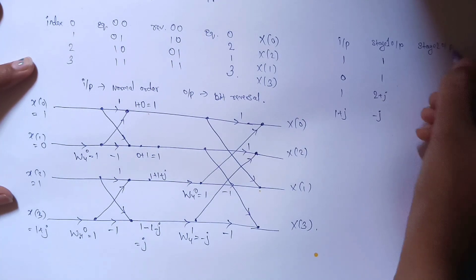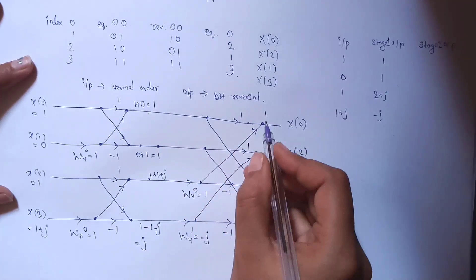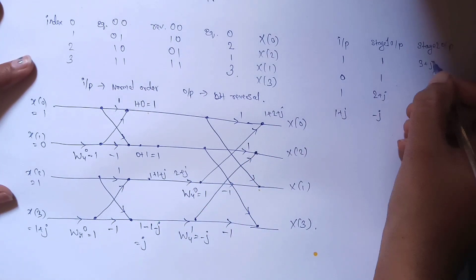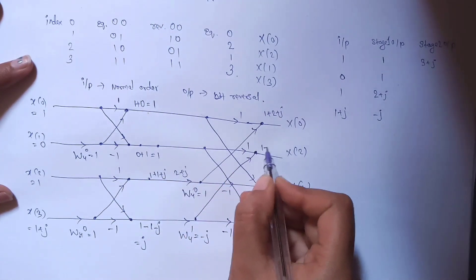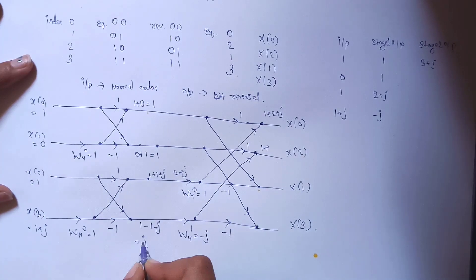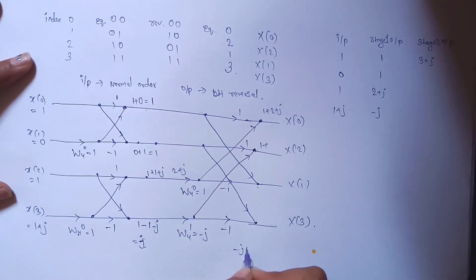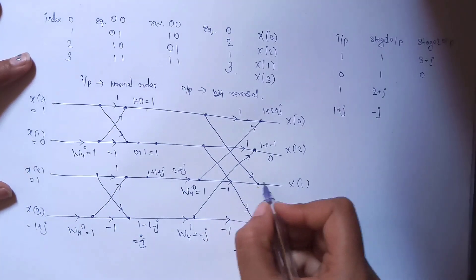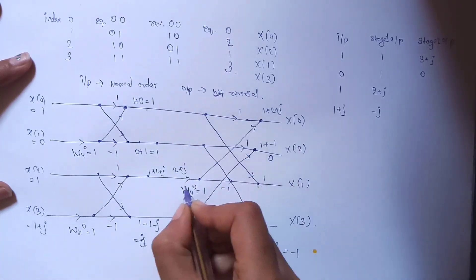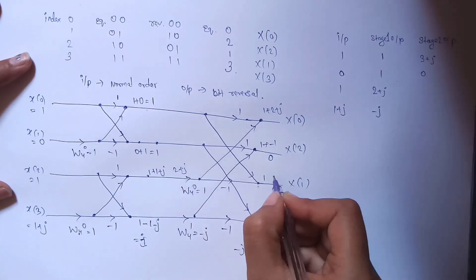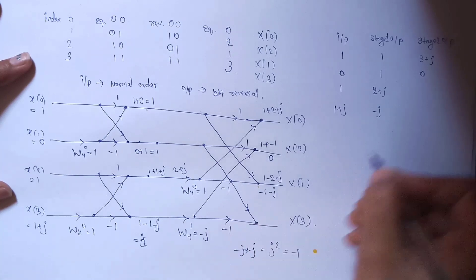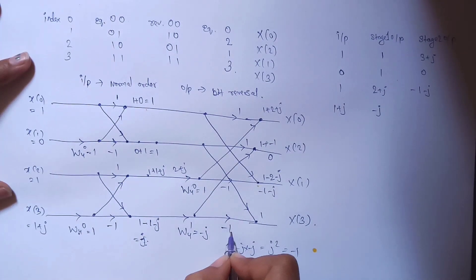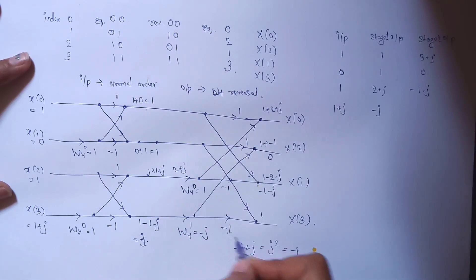For stage 2: first line, 1×1=1 from the top, plus 2+j gives 3+j. Second line: 1+j plus (−j×W4^1). Since −j×−j=j²=−1, we get 1+j+(−1)=0. Third line: data flows from 1 and (2+j)×(−1)=−2−j, giving −1−j. Fourth line: from 1 and (−j)×(−j)×(−1), we get −j×−j=−1 then ×−1=+1, so 1+1=2.